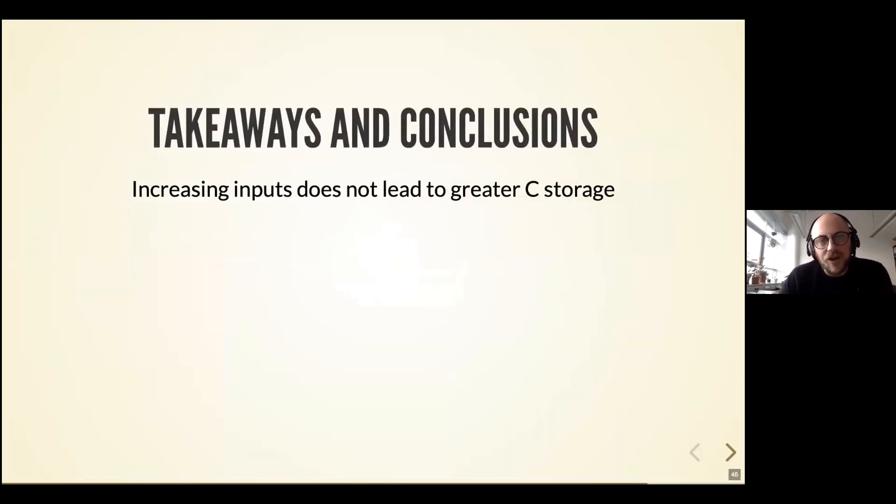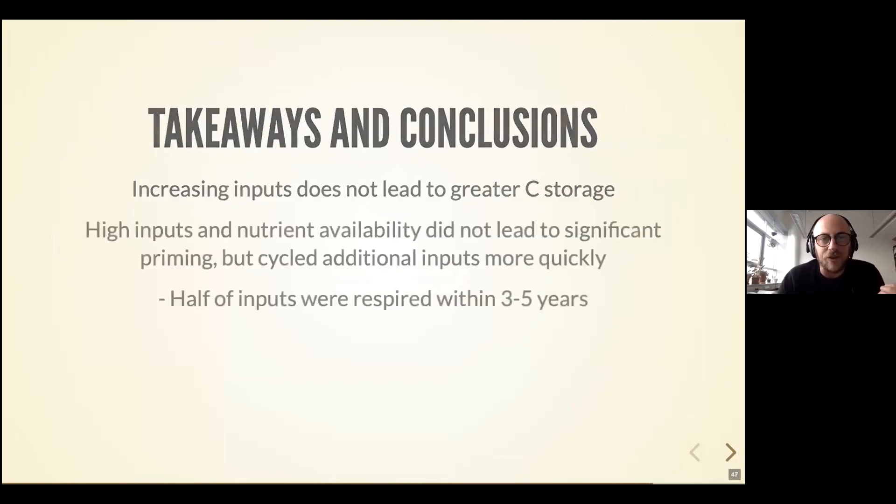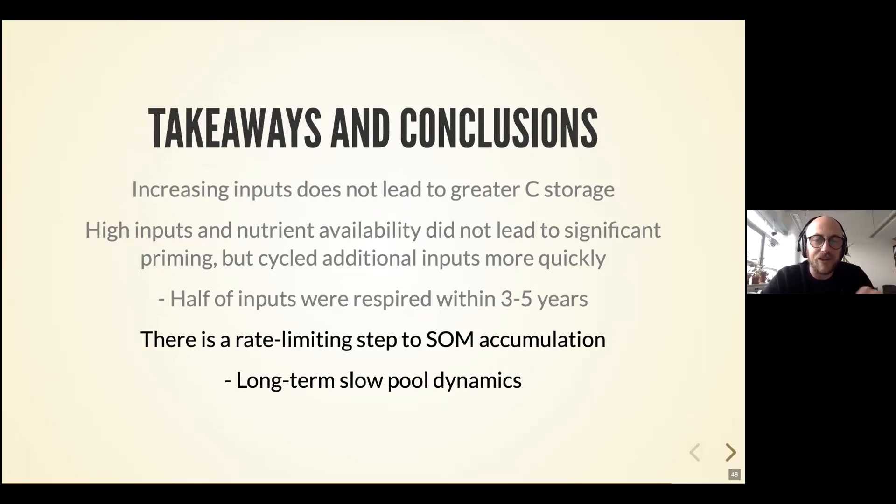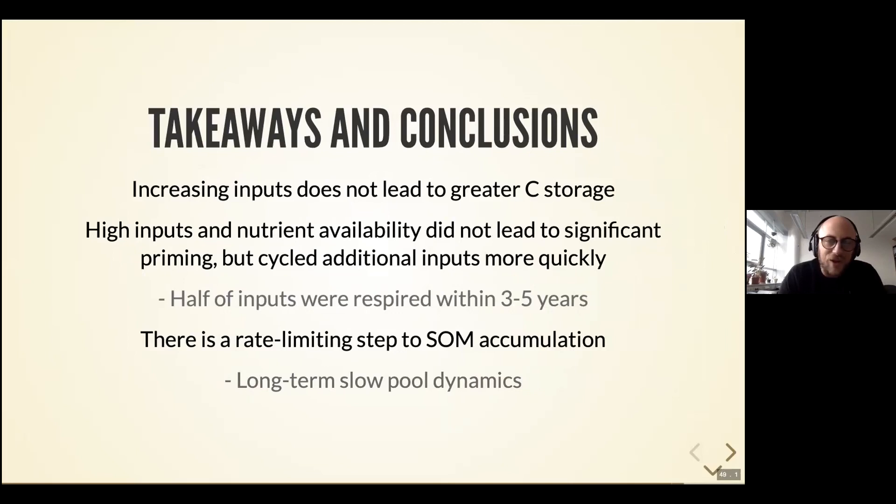So to wrap up the talk, our biggest takeaway is that increasing carbon inputs did not lead to greater storage in these soils. However, these high inputs of carbon and nutrients did not significantly decompose old carbon, so there was no large priming effect. Rather, the microbial community was really active and decomposed the inputs rather quickly. An important number here is that half of the inputs were respired out of the system within three to five years. What we also observed is this rate limiting step to carbon accumulation, mostly controlled by the slow pool. This might be aggregation, stabilization on soil minerals, and other mechanisms that lead to long-term carbon storage. With that I'd like to thank you for your attention and I look forward to any questions.